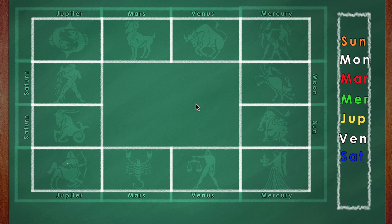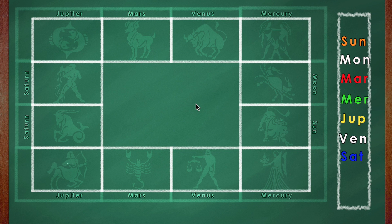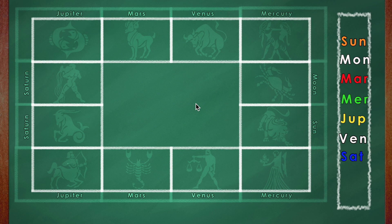Now we are back to the green board and to understand this lesson you must first know the Mulatrikona signs of each of the seven grahas. We are excluding Rahu and Ketu in this discussion. Planets are very much like human beings. Planets look at each other, planets have friendship and enmity between themselves. They rule like human beings for a particular period of time. They keep moving. So there are a lot of similarities between planets and human beings.